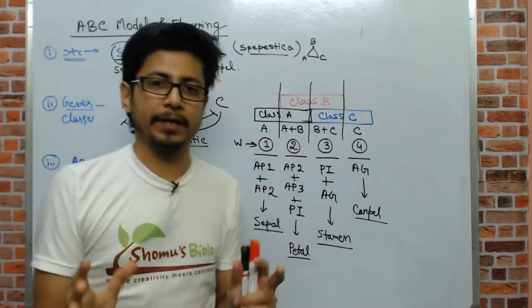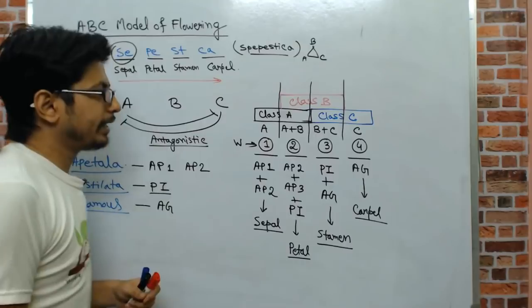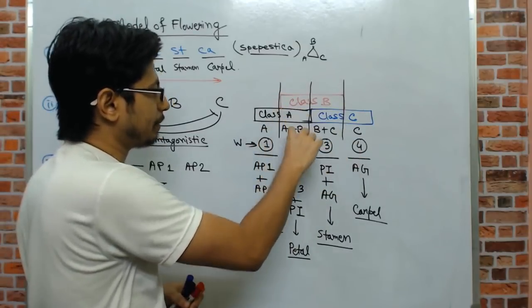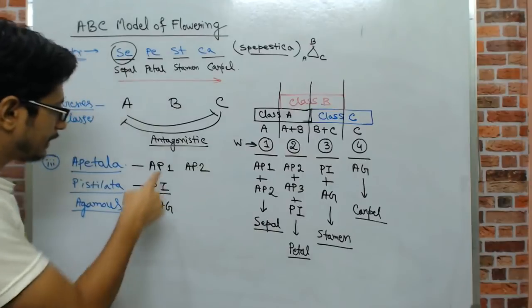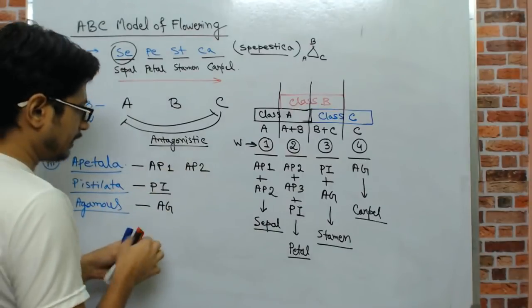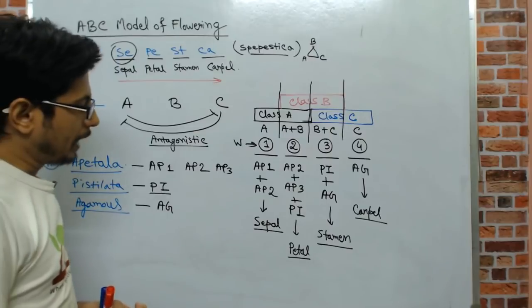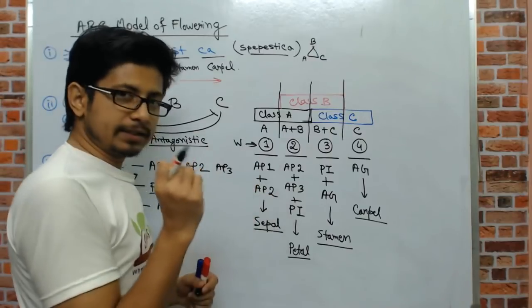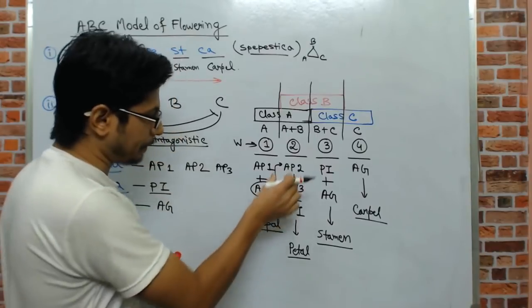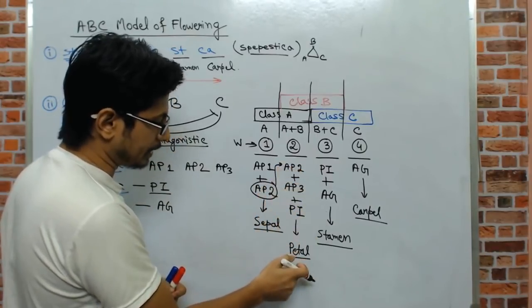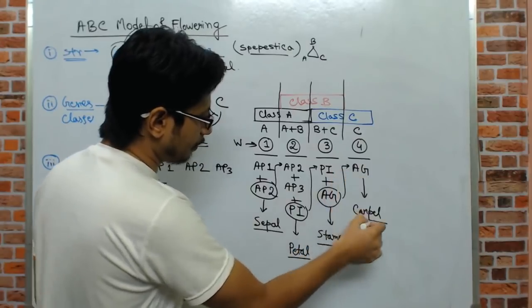There is nothing to memorize here — try to understand it clearly. Only class A gives sepal; class A plus B gives petal; class B plus C gives stamen; only class C gives carpel. The memory trick for gene names: AP1 and AP2 give sepal; AP2, AP3, and PI give petal; PI and Agamous give stamen; Agamous alone gives carpel. One gene from the bottom carries up to the next combination.